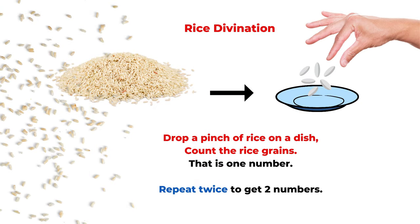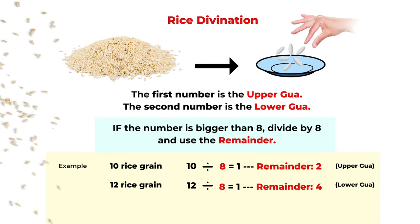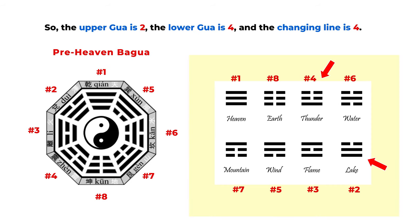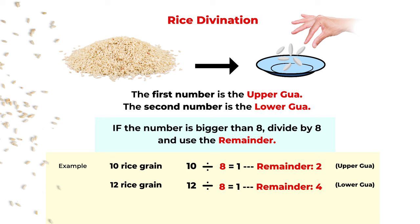So when we want to cast a Yi Jing hexagram, we basically need two numbers — one for the upper gua and one for the lower gua. In rice divination, the basic process is to pinch some rice grains and drop them on a dish, then count the number of grains — that's the first gua. Repeat again, pick another pinch of rice and count — that's your second gua. If the number is bigger than eight, since we only have eight trigrams, we divide by eight and use the remainder as the actual gua number.